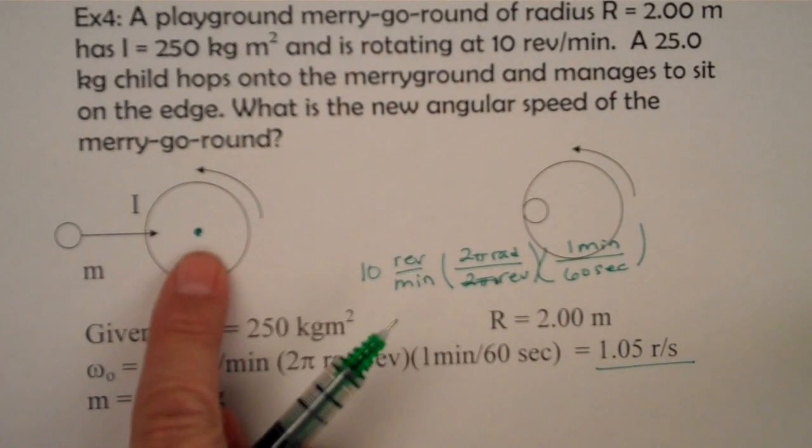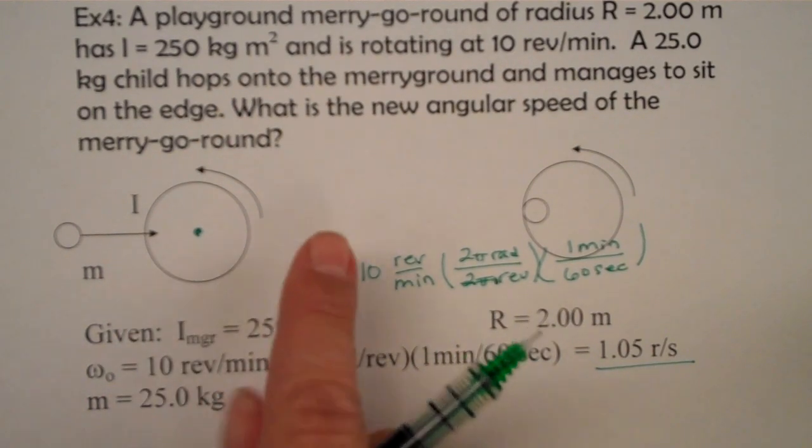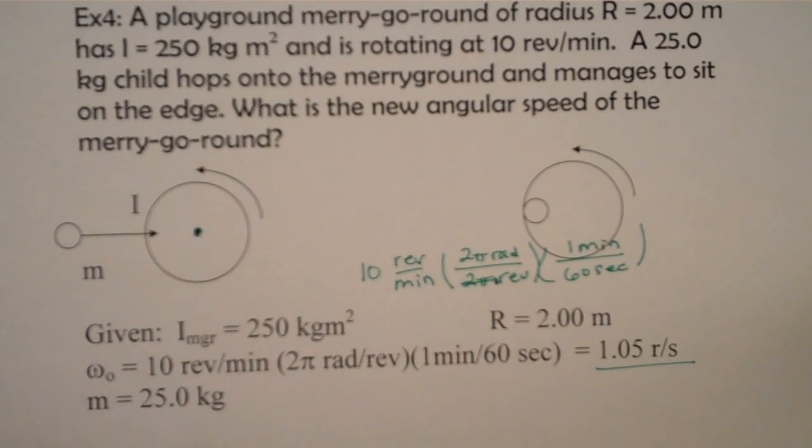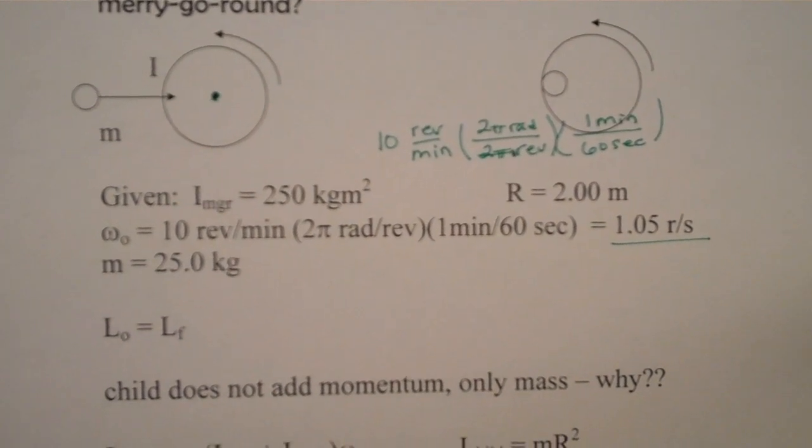Linear momentum would be conserved if the center of mass of the playground merry-go-round was free to move. But again, we're holding this in place. It is only free to rotate. So, angular momentum is conserved.